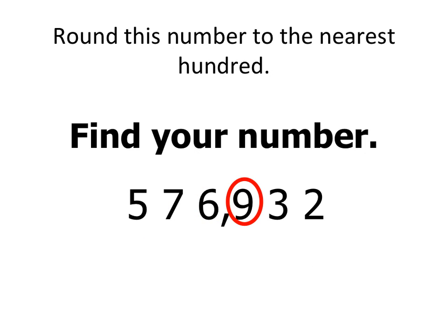Let's try this one. I'm going to round 576,932 to the nearest 100. Thinking of my poem, I have my 100's place, I look next door. 4 or less, just ignore. That means my 9's not going to change.